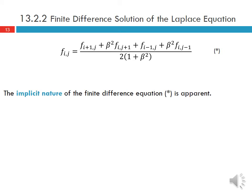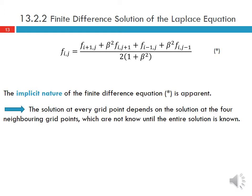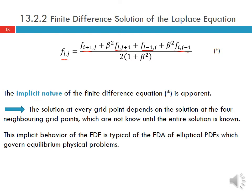The implicit nature of the finite difference equation is apparent: the solution at every grid point depends on the solution at the four neighboring grid points, which are not known until the entire solution is known. This implicit behavior of the finite difference equation is typical of the finite difference approximation of elliptic PDEs, which govern equilibrium physical problems where the whole solution domain is solved all at the same time.